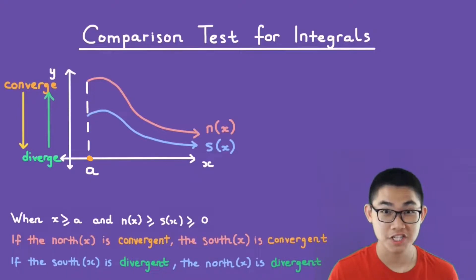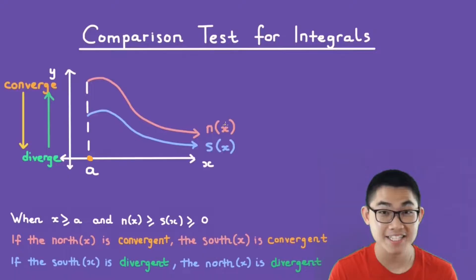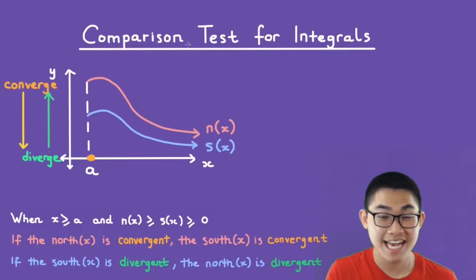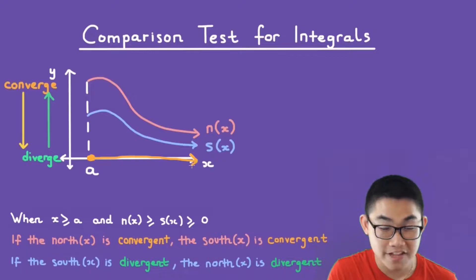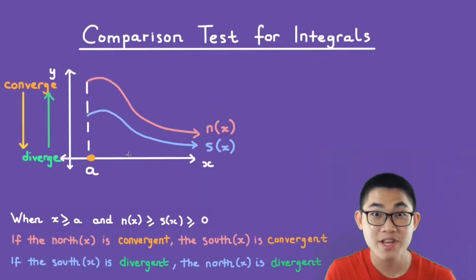Let's say we have two functions: the north function and the south function. The north function would be the pink function here, and we're going to call it n of x. The south function would be the blue function here, and we're going to call it s of x. The comparison test theorem says that from a, which is a positive number, until infinity, if the north function is above the south function, and both of these functions are above the x-axis, then we know two things.